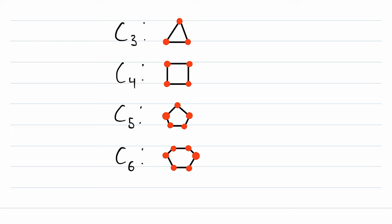So the cycle graph with seven vertices is C7, the cycle graph with eight vertices is C8, and so on. And notice that C3 is our first cycle graph, that's because cycle graphs have to have at least three vertices.